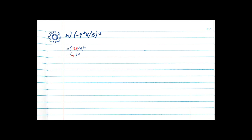We step back and check for more brackets — none. Step 2: exponents. We have a negative exponent here, so we flip it to get the reciprocal: 1 divided by negative 6 to the power of 2. Only the exponent sign changes — the base stays negative. We expand the exponent: negative 6 times negative 6 — a negative times a negative is a positive, and 6 times 6 is 36. Step 3: division — 1 divided by 36 is 0.0277. No further operations required, so our final answer is 0.0277.